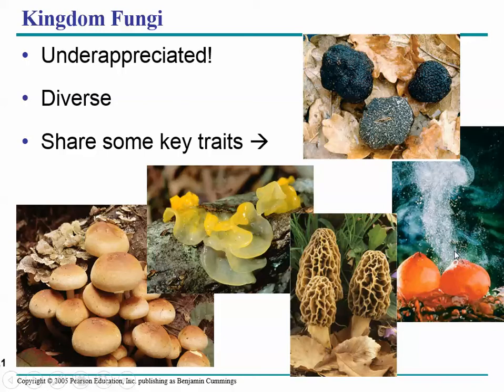We already did the calculations — to be a billion seconds old you have to be almost 33 years old, so to be a trillion seconds old you'd have to be over 32,000 years old. A trillion seconds is a long time, and a trillion spores released at once is pretty darn efficient. The point of this lecture is to understand the key characteristics shared by all fungi, no matter how diverse they look.